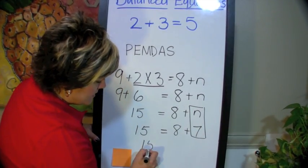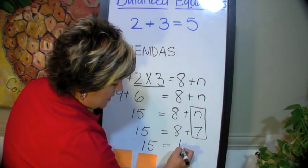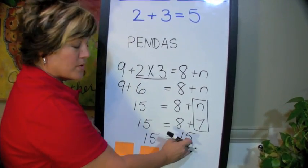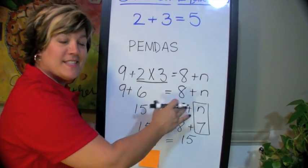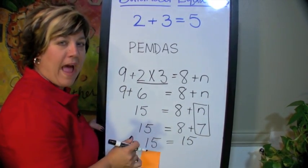When we solve this completely, we see that 15 is equal to 15. We have a balanced equation, which is what we're after here.